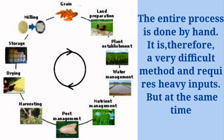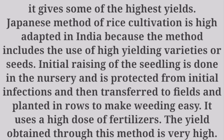The entire process is done by hand, making it a very difficult method that requires heavy inputs, but it gives some of the highest yields. The Japanese method of rice cultivation is highly adapted in India. It uses high-yielding varieties of seeds, raises seedlings in a nursery protected from initial infections, then transfers them to fields planted in rows to make weeding easy, with a high dose of fertilizer, giving very high yields.